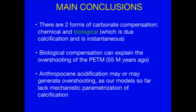There are two forms of carbonate compensation: one is chemical, which you're all used to, and one is biological, related to calcification. There may have been biological calcification to explain the overshooting in the PETM 55 million years ago. And if we look at the Anthropocene acidification, depending on what calcification does, we may end up — strangely enough — going from an acidified ocean to an alkalized ocean. That's why it's so important for geologists to know what calcification does in acidification events. If we're going to predict what the future looks like, we need to know. Thank you.